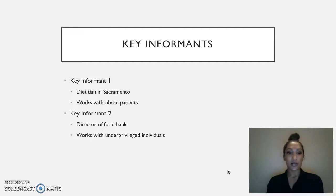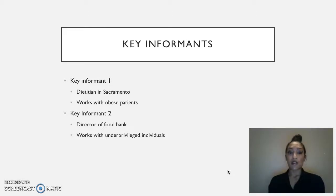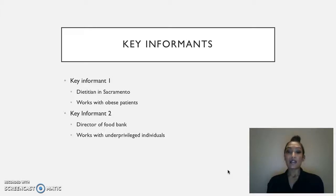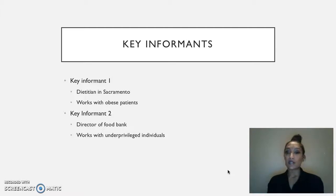The first key informant is a dietitian in Sacramento. I chose her because she works one-on-one with obese patients in Sacramento County through private practice. She also travels to different countries and helps find solutions to health issues, and as part of her traveling job she learns about many different cultures. This stood out to me because Sacramento is a diverse city where obesity affects many different populations, and different cultures have different understandings of health and obesity.